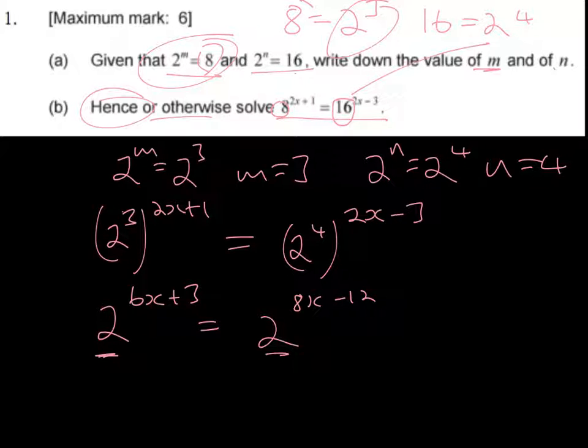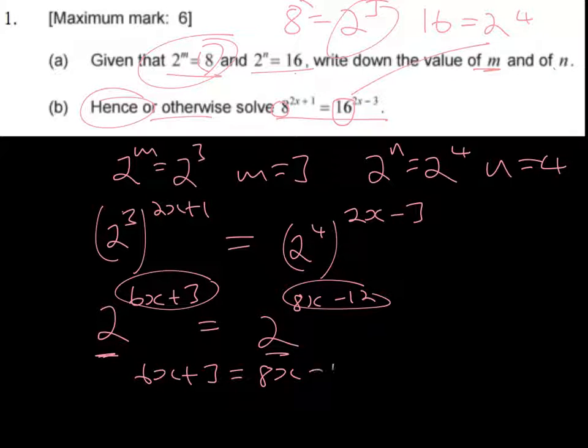We can just equate the exponents, so we can say that 6x plus 3 is equal to 8x minus 12. Remember, we can only do that because the bases are the same now.